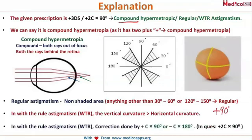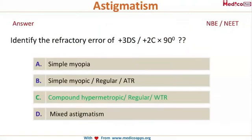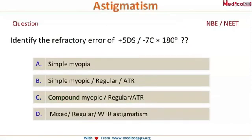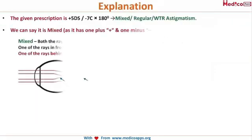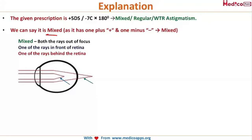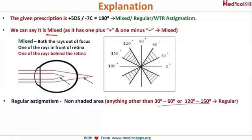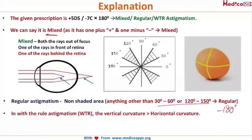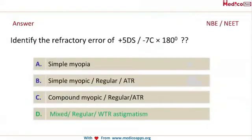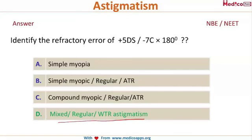Now let's look at another question: plus 5 diopter sphere and minus 7 diopter cylinder at 180 degrees. There is a plus and a minus, so it is a mixed type of astigmatism. The axis is not between 30 to 60 or 120 to 150, so it is regular. It is with-the-rule because minus 180 is with the rule, and plus 180 is against the rule. The answer is mixed regular with-the-rule astigmatism.